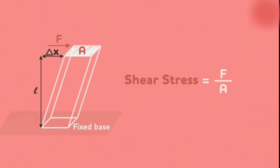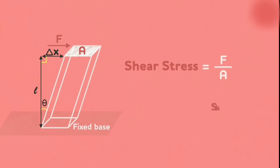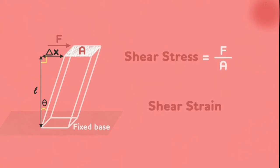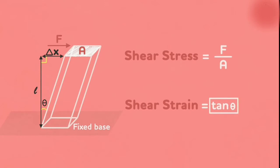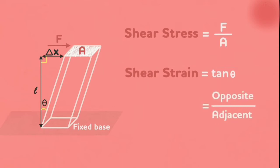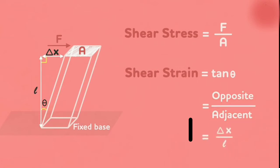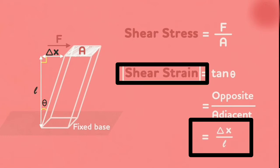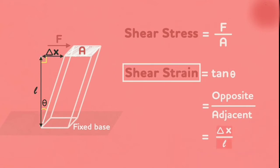Theta is the shear angle. Shear stress means there is a change in shape, not in volume. The amount of change in shape — how much the angle changes — is tan theta. Tan equals opposite side over adjacent side: delta x is the opposite side and l is the adjacent side. So shear strain equals delta x divided by l, which is the most important term used in this derivation.